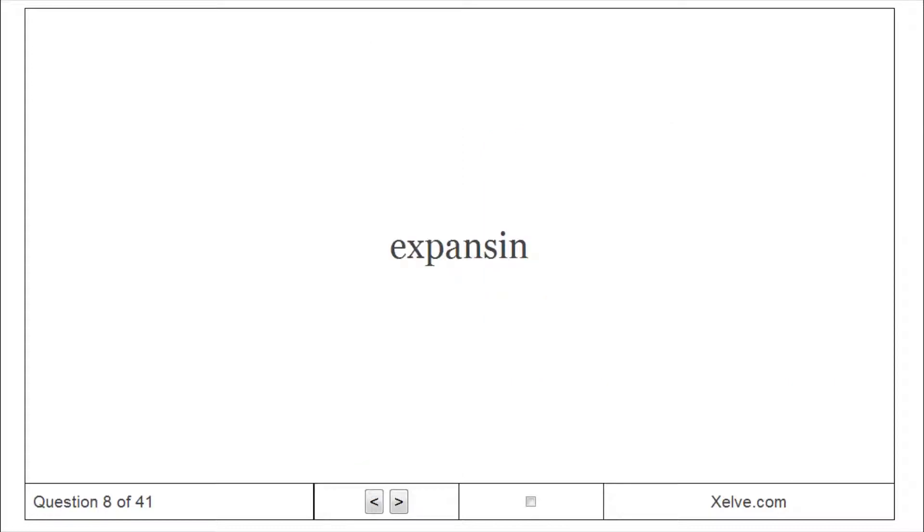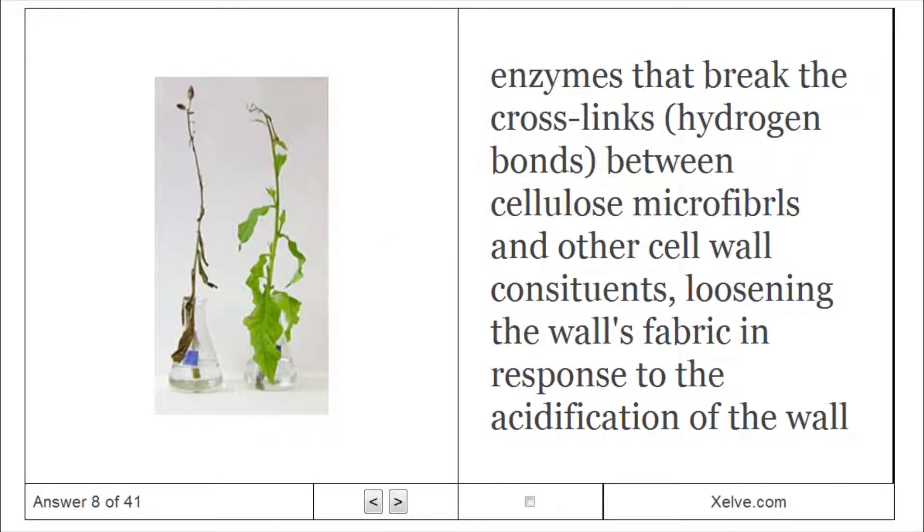Acid expansion: enzymes that break the cross-links (hydrogen bonds) between cellulose microfibrils and other cell wall constituents, loosening the wall's fabric in response to the acidification of the wall.